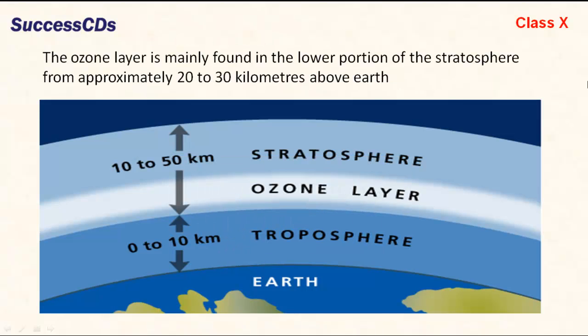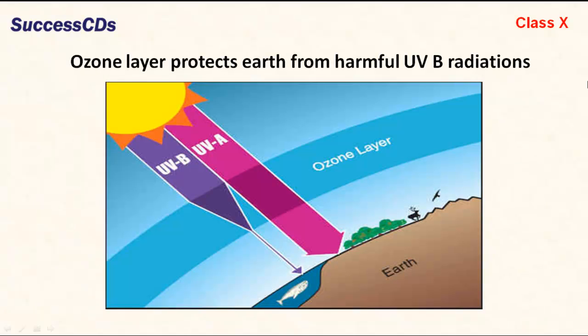The ozone layer is mainly found in the lower portion of the stratosphere, from approximately 20 to 30 km above Earth. The ozone layer protects Earth from harmful UVB radiation. A decrease in ozone concentration leads to an increase in UVB radiation reaching the Earth's surface.